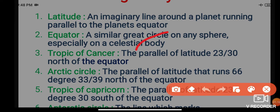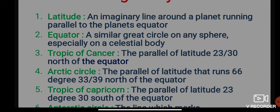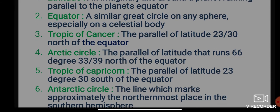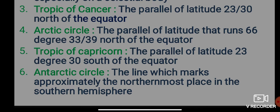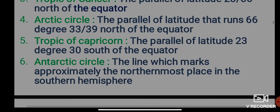The equator is a great circle on any sphere, especially on a celestial body — that is what is known as the equator. What is the Tropic of Cancer? The parallel of latitude 23 degrees 30 north of the equator is known as the Tropic of Cancer. What is the Arctic Circle? The parallel of latitude that runs 66 degrees 33 minutes north of the equator is known as the Arctic Circle.